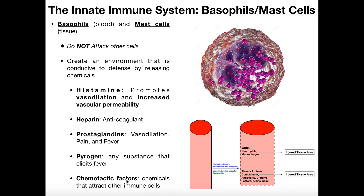Chemotactic factors are just chemical signals that attract other immune cells. That's basically the gist of basophils and mast cells — all of these chemicals they release don't really attack any other cells; they just create an environment conducive to fighting the infection. Basophils and mast cells have large granules, so like neutrophils they are granulocytes. With basophils, the granules are very dense, and when looked at under a microscope, the granules are so dense that often the entire cell appears blue. This is our second type of granulocyte, and mast cells operate the same way.